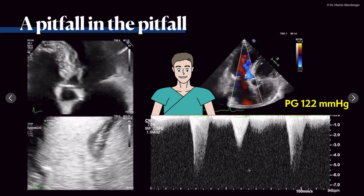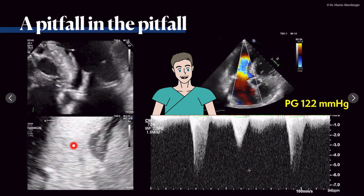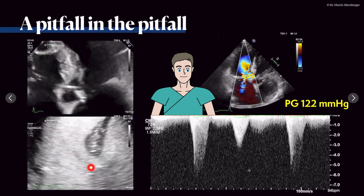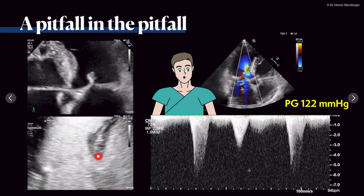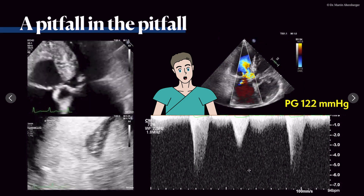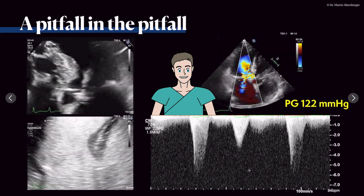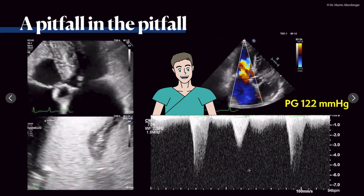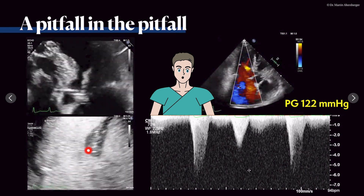In this case, there is a mitral regurgitation which is definitely relevant. With contrast, you can see that the LVOT is truly obstructed. This is the anterior mitral valve leaflet and here the posterior mitral valve leaflet. The anterior leaflet moves towards the septum during systole, and you can see a gap: because the posterior mitral valve leaflet is short compared to the anterior, it cannot cover the rest of the opening. This is where the mitral regurgitation arises as a complication of the LVOT gradient and the systolic anterior motion.